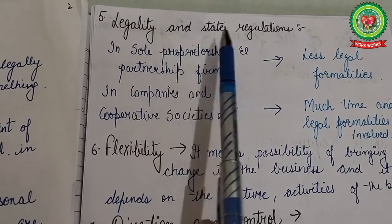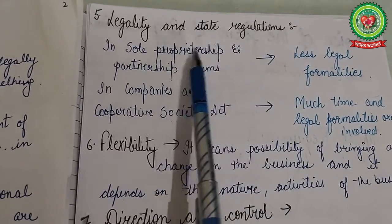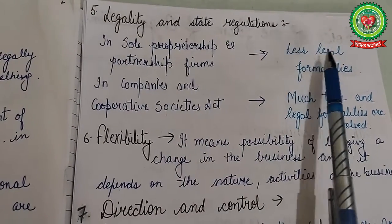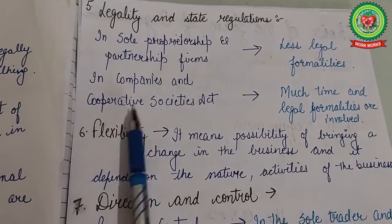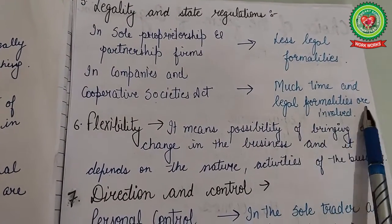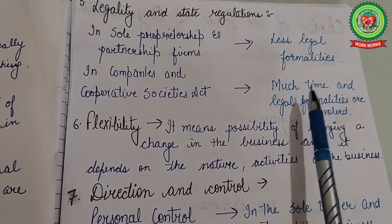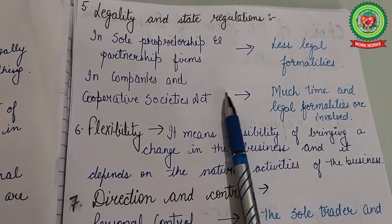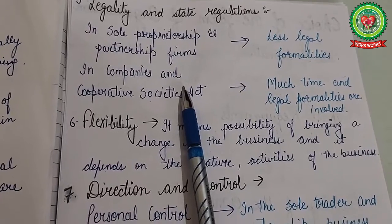The next factor is legality and state regulations. In sole proprietorship and partnership firms, fewer legal formalities are involved. But in companies and cooperative societies, much time and many legal formalities are involved in their incorporation and winding up. This point should be considered while choosing the form of organization.